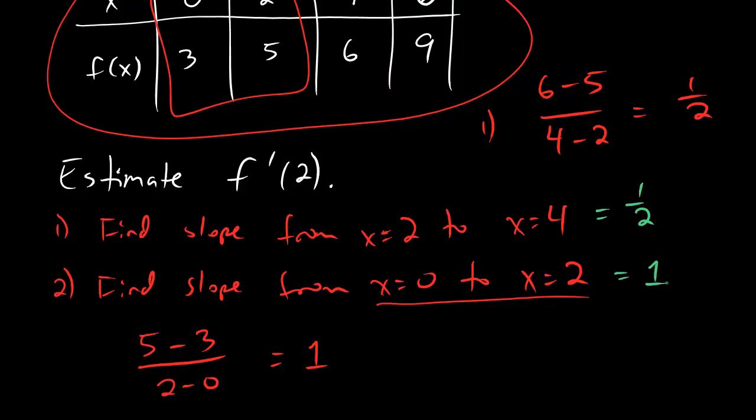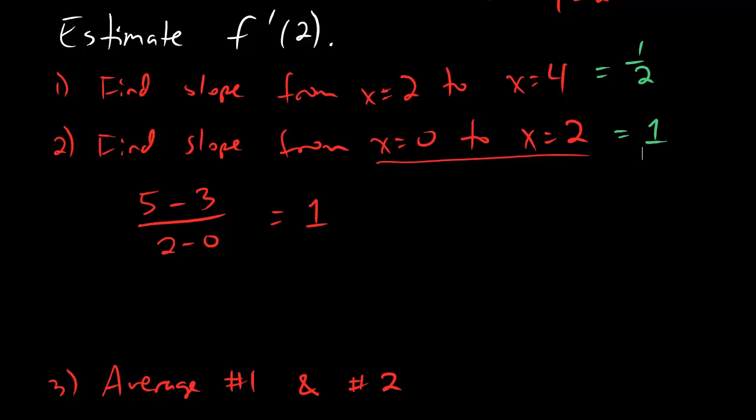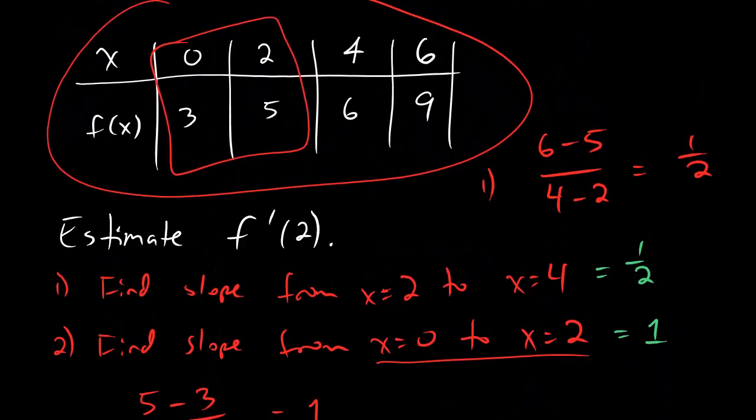So step 1, we got a half. Step 2, we got 1. And now for step 3, we're just going to average those two numbers together. So this is going to be 1 half plus 1 divided by 2. And that ends up being 3 over 4, people. Bam. 3 over 4 is the best approximation you can give to the derivative of the function with values in this table at the point 2.